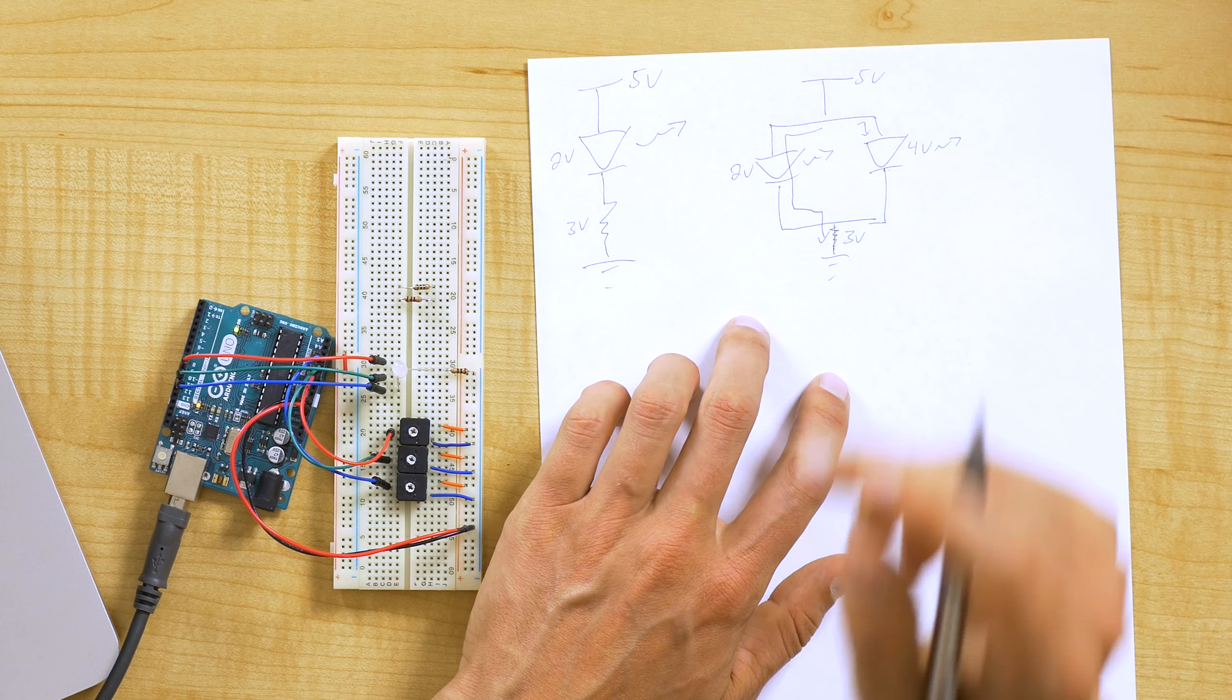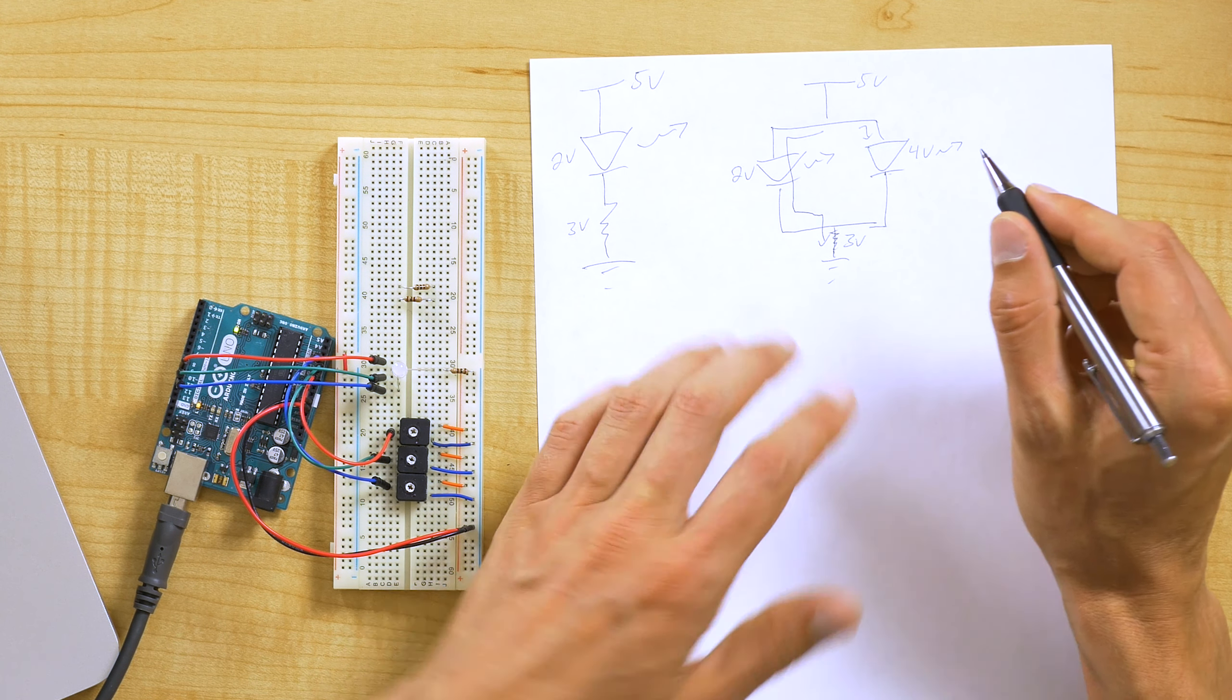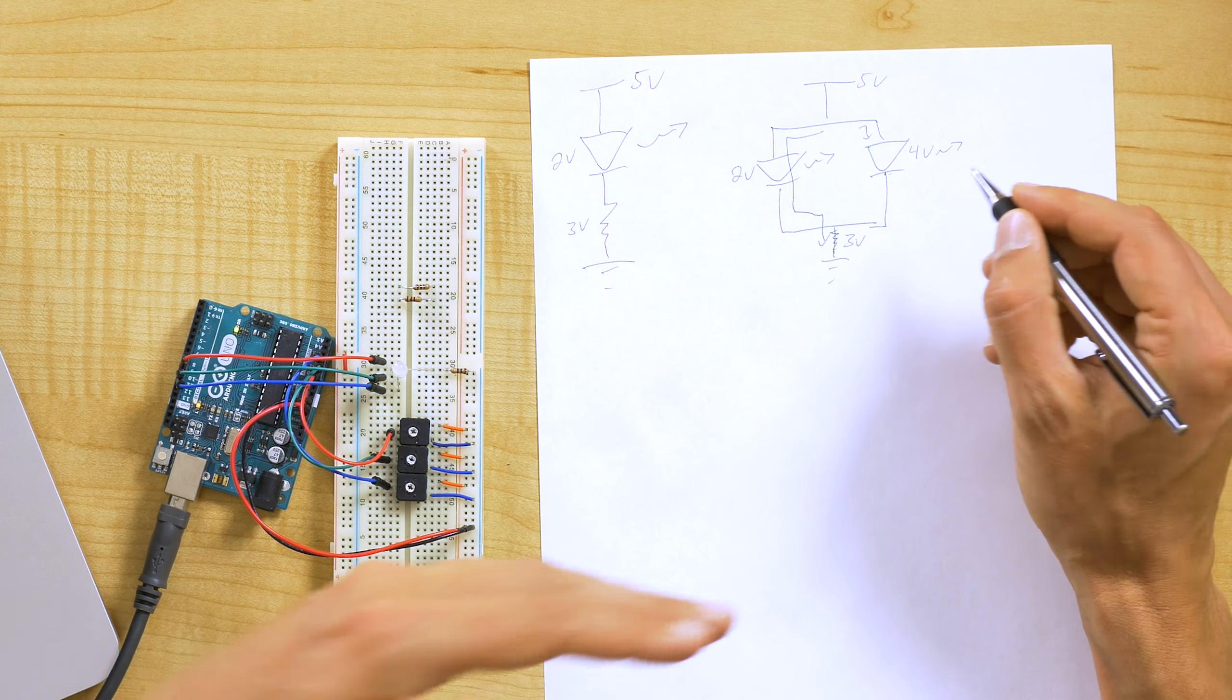Now there might be a little bit because this will start to conduct at a little bit less than the nominal four volts. And this will be a little bit more than the two volt forward voltage because you're going past that forward voltage to get the current going. So that's why you might see a little bit, but there's definitely going to be a huge imbalance between where that current is going.